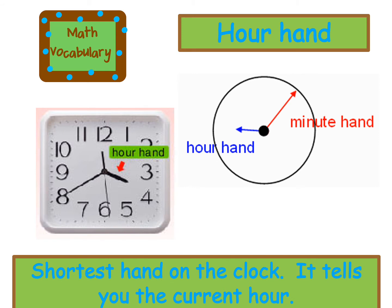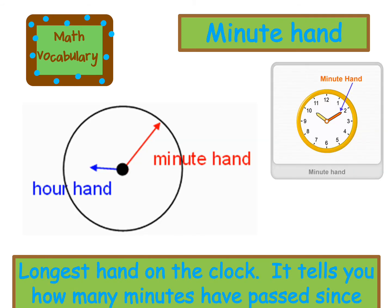The long hand is called the minute hand and the short hand is called the hour hand. When you look at the hour hand, it's pointing to the hour, and that's the first number we say when we're telling time. The minute hand is the long hand and it points to how many minutes have passed on the hour.